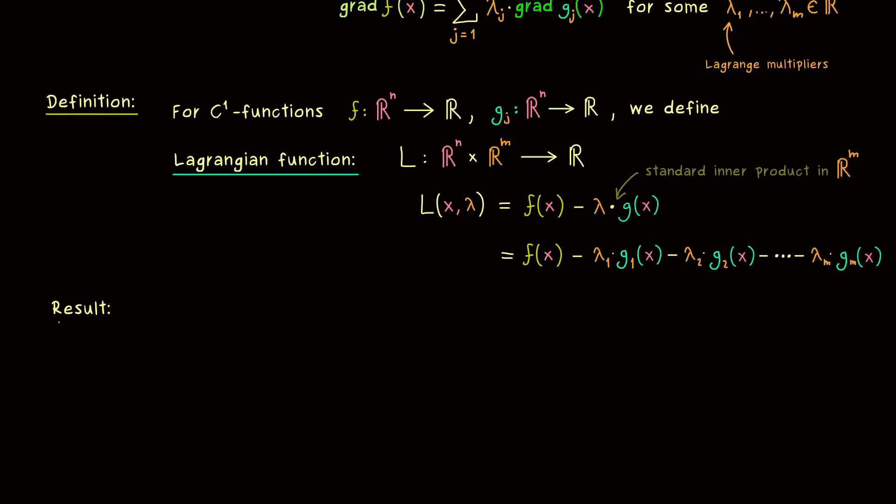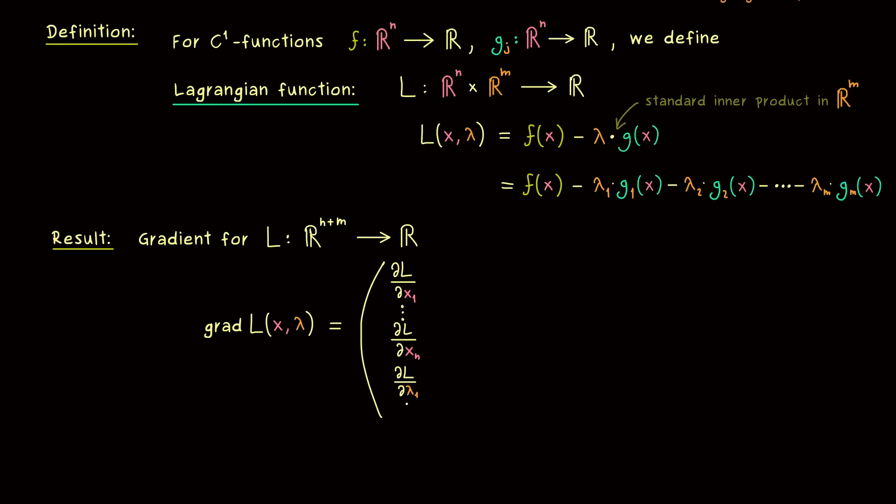The result is that we can use this Lagrangean to calculate extrema of f under the constraint. We will calculate the gradient of L, seeing the function L as a function with m plus n inputs. This simply means that the gradient of L is a vector in ℝⁿ⁺ᵐ. In the next step, we can formulate this vector. The first component is ∂L/∂x₁, continuing until ∂L/∂xₙ, and then we start with the lambda coefficients, ∂L/∂λ₁, continuing until ∂L/∂λₘ.